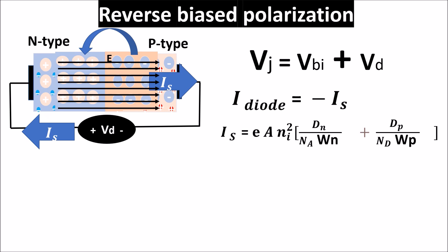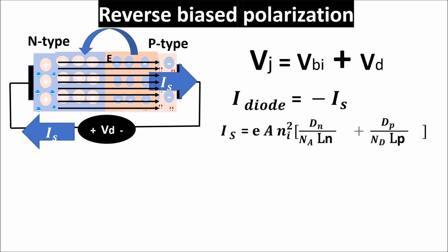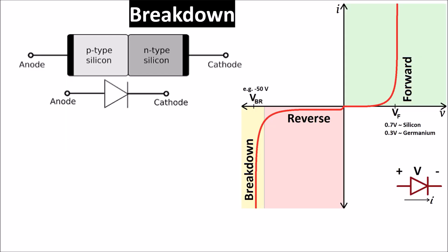As noted, this is a qualitative explanation. We didn't derive the current from the correct distribution. If we had derived it correctly, we would have obtained an equation where Ln and Lp are the diffusion lengths of electrons in the P region and holes in the N region respectively.